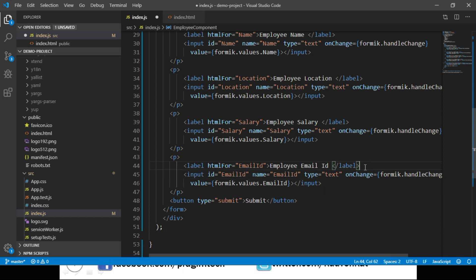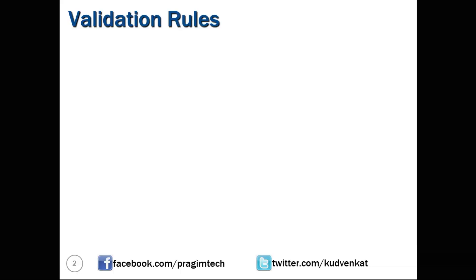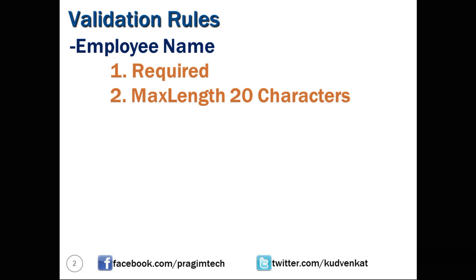From this form's input data, we want to add validations for employee name, employee location, and employee email id. Let's decide our validation rules. For employee name, we want two types of validations: one is required field validation and the other is max length validation. We want to restrict employee name to not exceed 20 characters.